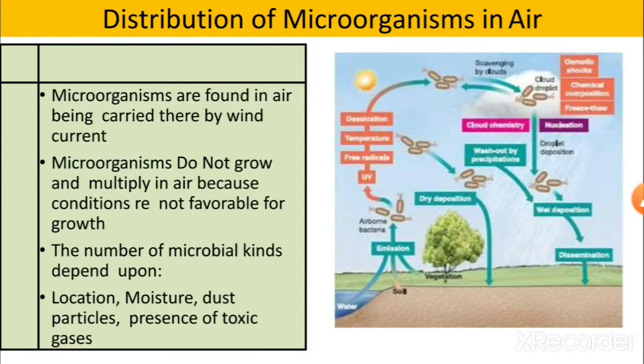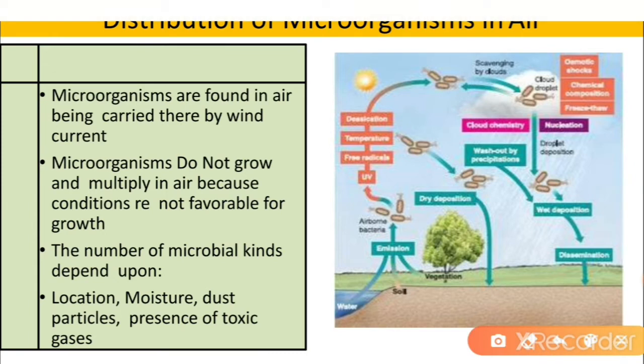Next is the distribution of microorganisms in air. Air is a very good vehicle for the distribution and transmission of diseases, which is why microorganisms are also present in the air. Microorganisms are found in air being carried there by wind currents, but they do not grow and multiply in air because conditions are not favorable — mainly because there is no moisture in air, and moisture is the most important factor for microbial growth.